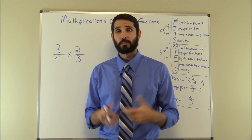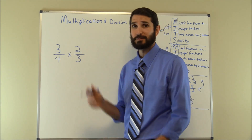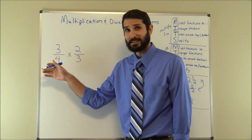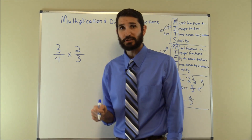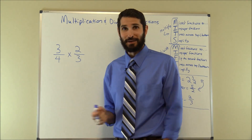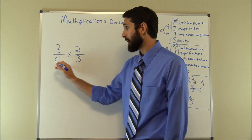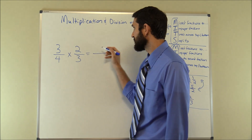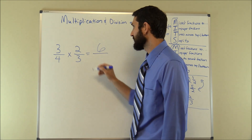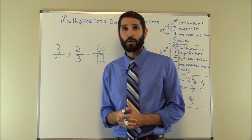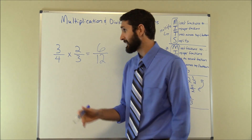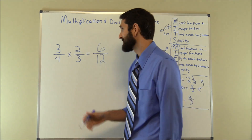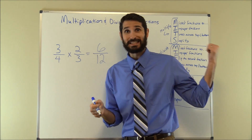Let's go ahead and work the first problem: three over four times two over three. We refer to our mnemonic MITS — the first two parts M and I stand for turning mixed fractions into improper fractions. We don't have any mixed fractions here, just basic proper fractions. So we go to T, and times across the top and the bottom. Three times two gives us six, and four times three gives us twelve.